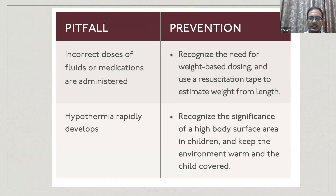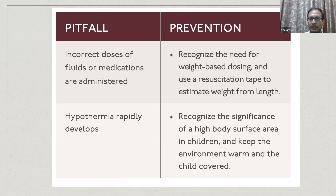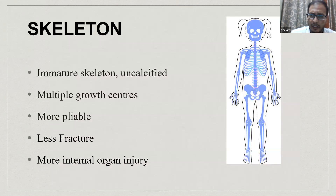A very common pitfall during resuscitation is using incorrect doses of fluids or medications, especially in centers that regularly attend adult patients. Always calibrate and adjust doses according to the child, and get all charts available. Hypothermia is common due to heat loss from body surface area, so keep the emergency room temperature at a level that supports the child — the child's benefit is more important than the team's comfort. Keep the environment a little warm and favorable.